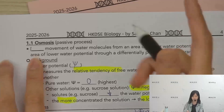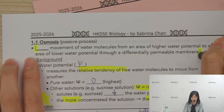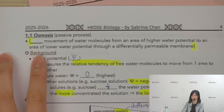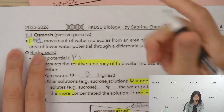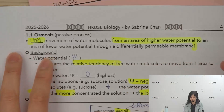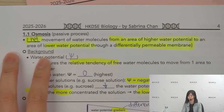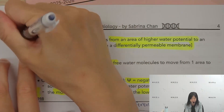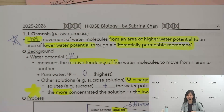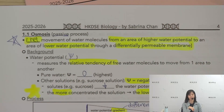The definition of osmosis is: the net movement of water molecules from an area of higher water potential to an area of lower water potential, through a differentially permeable membrane. This sentence is very important because it is the answer you must write for exam questions.